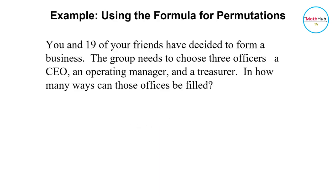To illustrate how we can use the formula for permutations, let us take a look at the following example. You and 19 of your friends have decided to form a business. The group needs to choose three officers, a CEO, an operating manager, and a treasurer. In how many ways can those offices be filled?